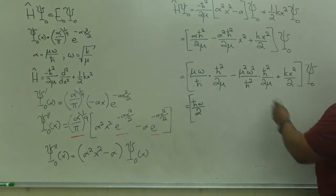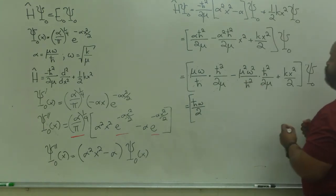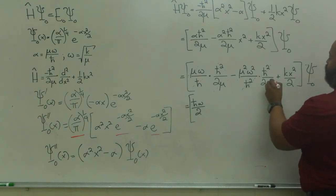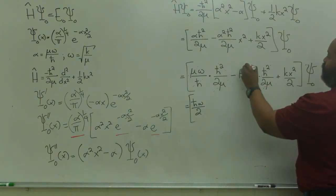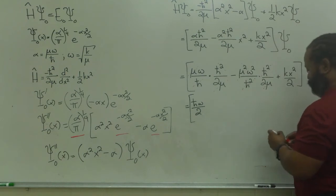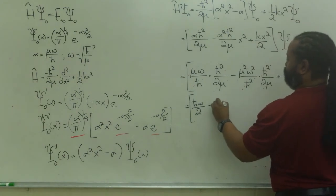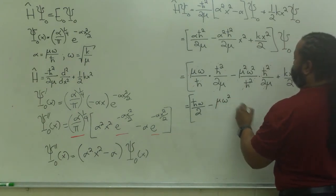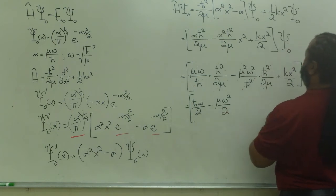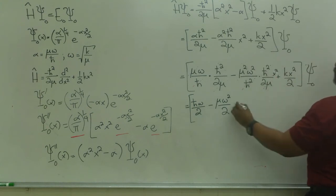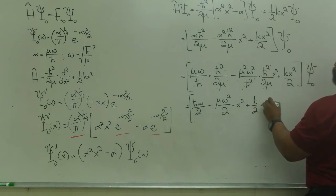And now, I'm looking at cancellations here. So, my h bar squared cancels top and bottom. I can cancel a mu here and the power of 2. So, this is going to leave me with minus mu omega squared over 2. Got to remember to pull down the x squared from here. So, that's times x squared. That's k over 2 times x squared.